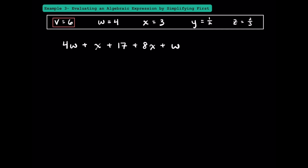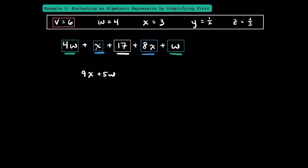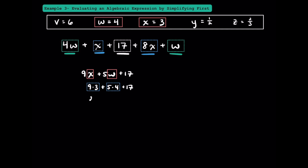Let's evaluate this algebraic expression, but let's simplify first. Combining 1x and 8x, we can write 9x. Then combining 4w and 1w, we can write 5w. This constant term of 17 is just going to be on the end. Now that we've combined all the like terms, let's substitute the values in. 9x is really 9 times 3, and 5w is really 5 times 4, and we still have this constant plus 17. Since the two multiplication problems are most important, we're going to do those first. 9 times 3 is 27, and 5 times 4 is 20. From left to right, 27 plus 20 is 47, so we can write 47 plus 17, and that gives us an answer of 64.